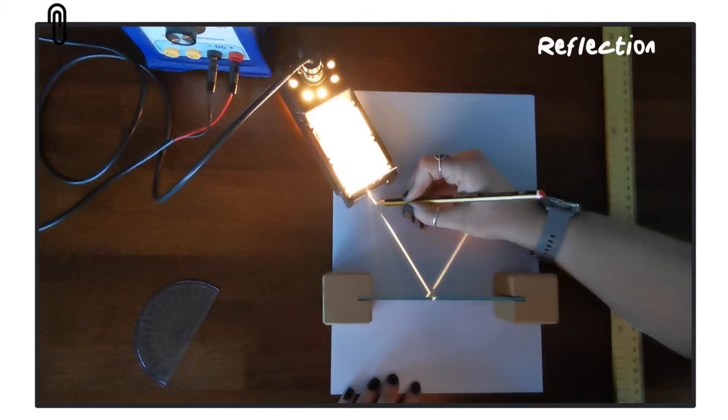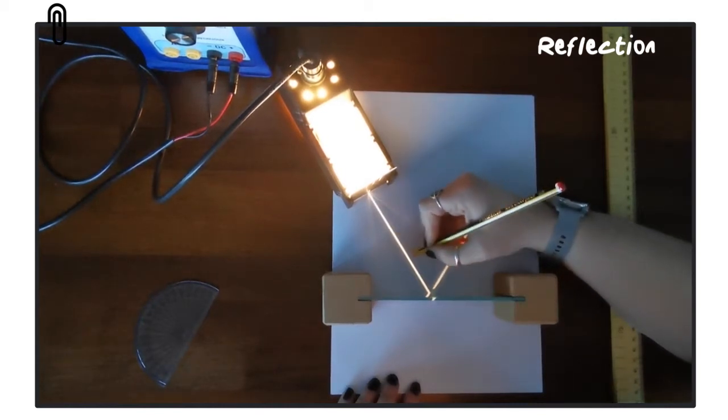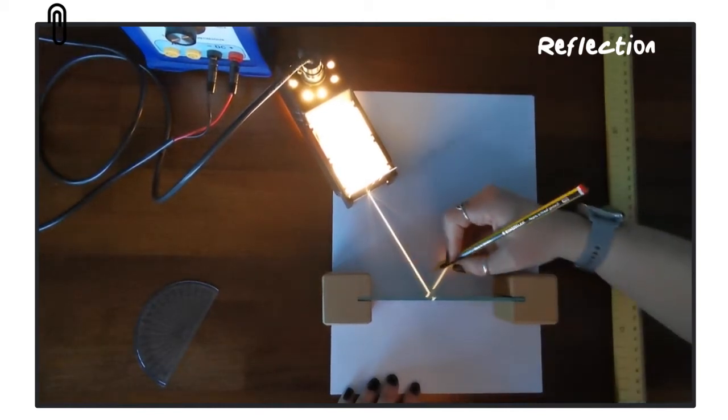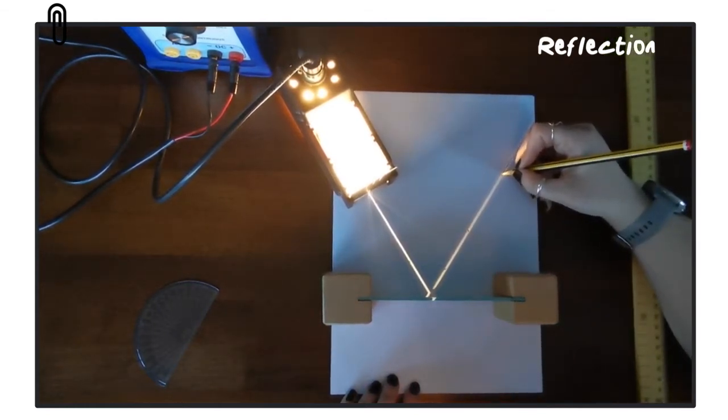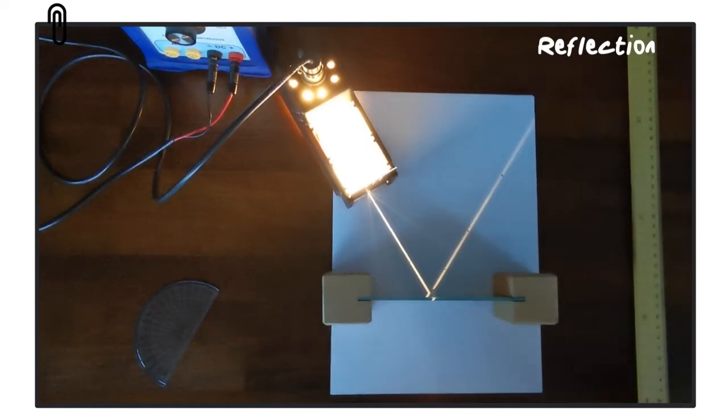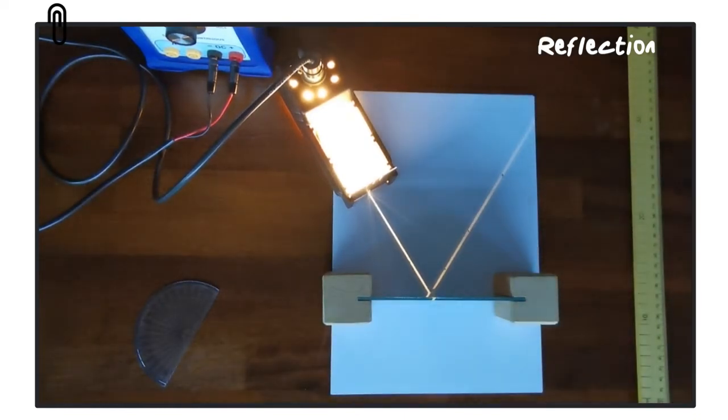We're now going to make a record of where those light rays are going, so we're going to use a pencil to place a couple of crosses along the first beam of light that's going into the mirror and the second beam of light that is leaving the mirror. Now these beams of light have specific names so we'll go through that in just a second.